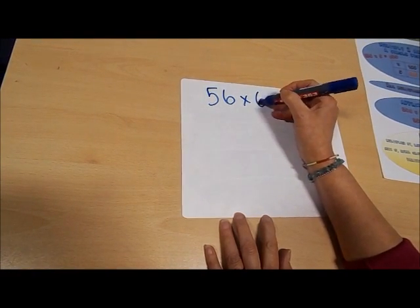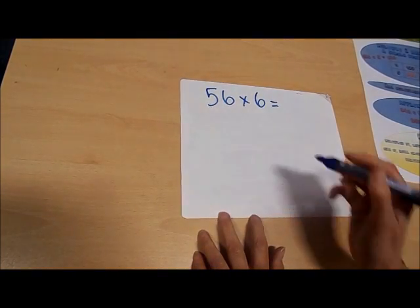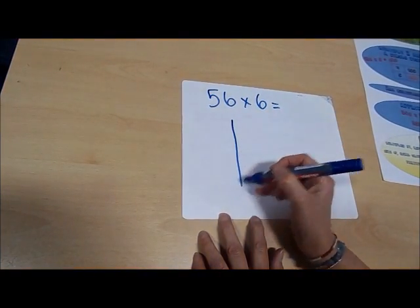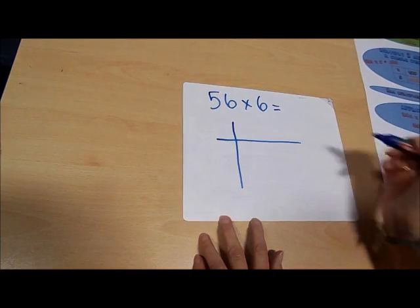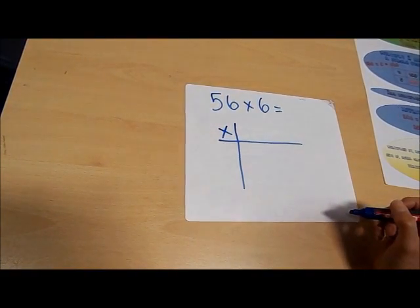We're going to use grid method multiplication. So I'm going to make myself a grid like this and put my multiplication sign in the corner there.